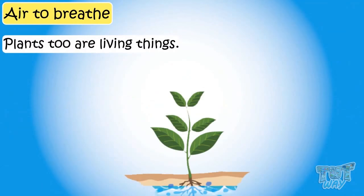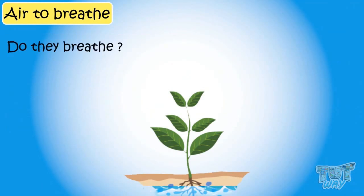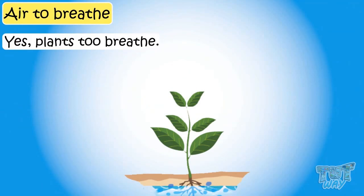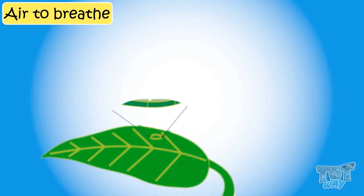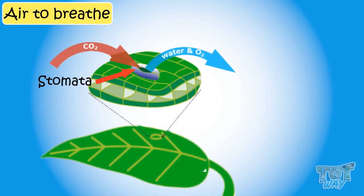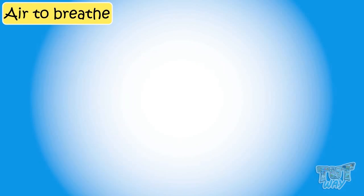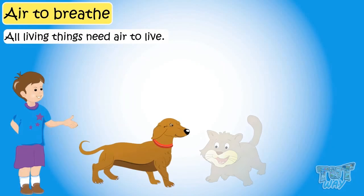Plants too are living things. Do they breathe? Yes, plants too breathe, and they breathe through tiny pores on leaves called stomata. We will learn more about it in higher grades. So kids, we learned that all living things need air to live — living things cannot live without air, which is necessary for breathing.